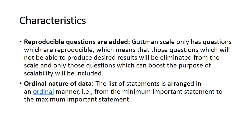The third characteristic of the Guttman scale is reproducibility — only questions that produce desired results are retained. When a researcher constructs a Guttman scale, a large number of items are initially recorded. Those questions which produce the relevant results are kept, while items that seem irrelevant are eliminated. The fourth characteristic is its ordinal nature — items are ordered from minimum to maximum importance, numbered one, two, three, four, and so on.